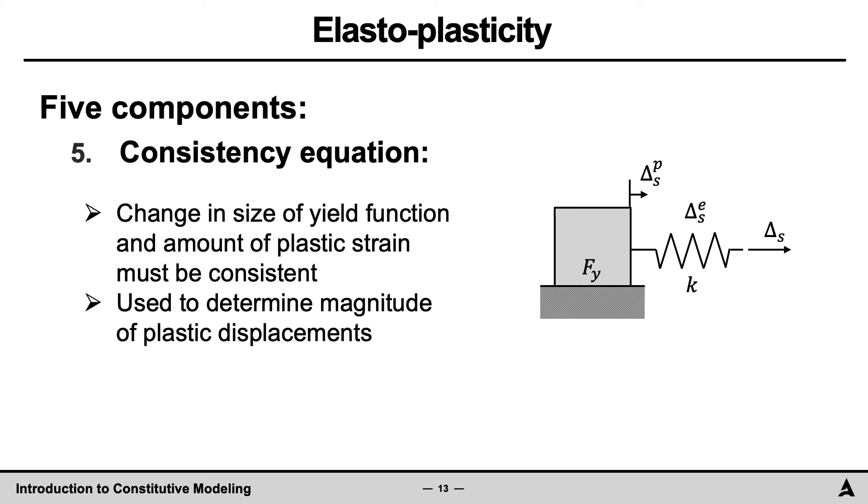The fifth item is the consistency equation. Essentially, the consistency equation brings together items one through four by requiring that the change in size of yield function and the amount of plastic strain must be consistent. It is through the use of the consistency equation that the magnitude of plastic displacement, an analogy for plastic strains, are determined.